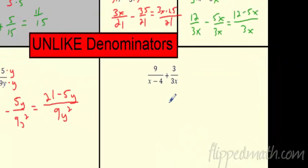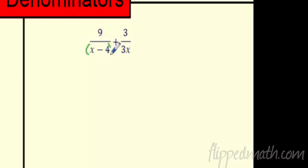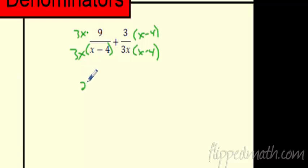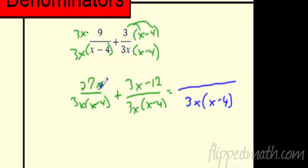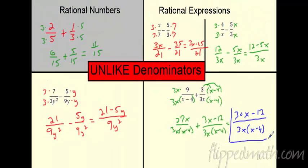Now with binomial denominators 3x and (x−4) — I think of these as whole quantities. What is 3x missing? It's missing an (x−4). What is (x−4) missing? It's missing a 3x. Whatever you do to the bottom, do to the top, so I put (x−4) up there and 3x up there. On the left side: 3x times 9 is 27x. On the right side I have to distribute: 3x minus 12. The common denominator is 3x(x−4). Combining like terms: 27x plus 3x is 30x, minus 12. Final answer: (30x − 12) over 3x(x−4).